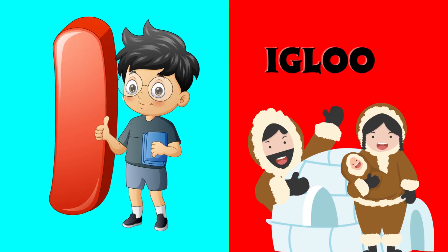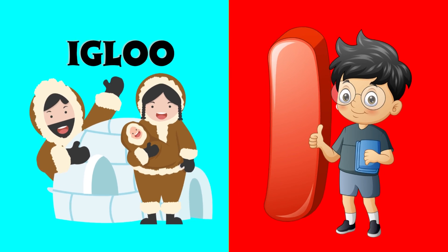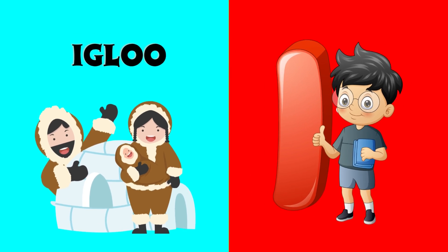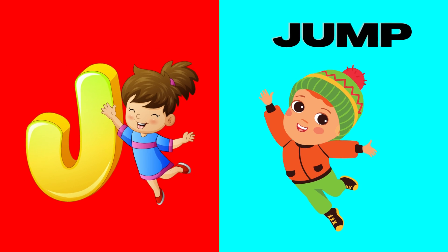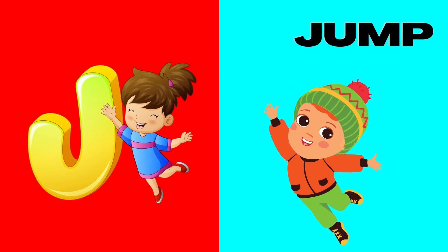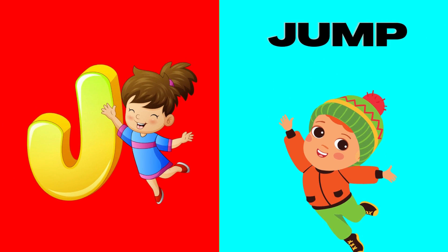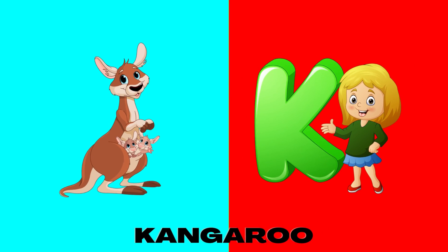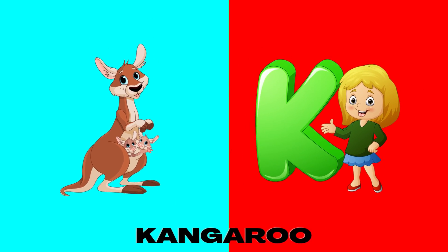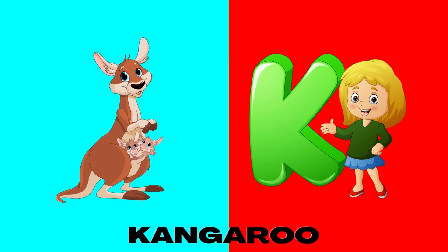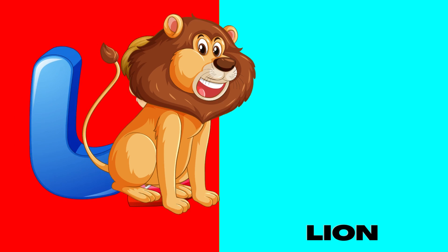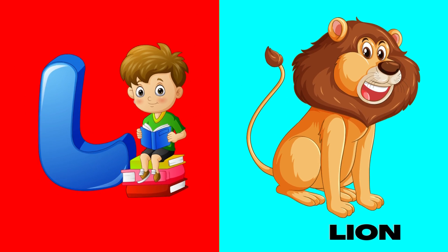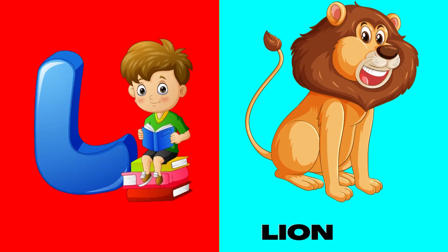I is for igloo, i-i-igloo. J is for jump, j-j-jump. K is for kangaroo, k-k-kangaroo. L is for lion, l-l-lion.